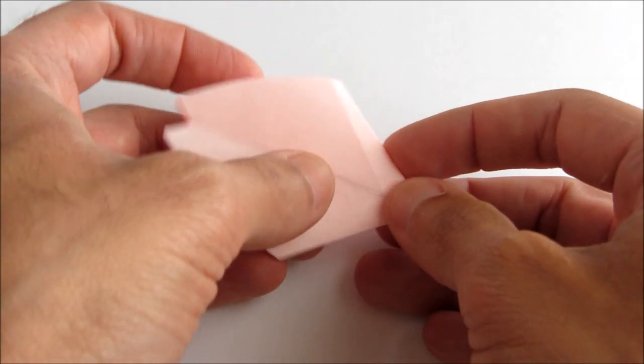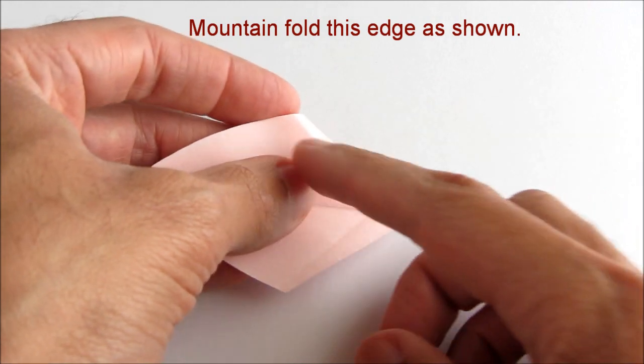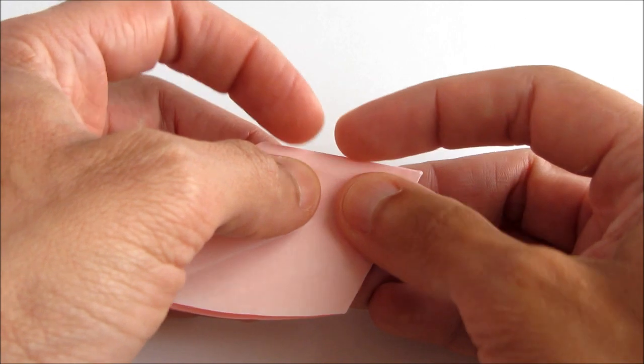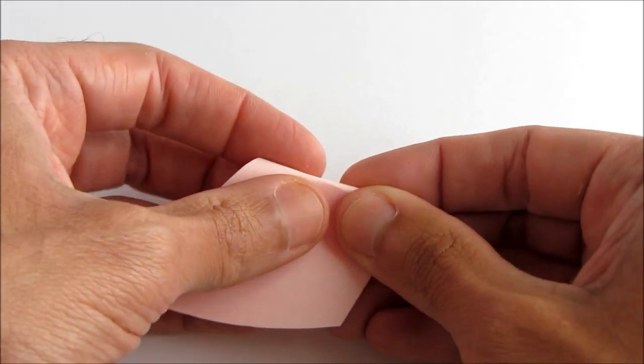So on that lower right edge, what we're going to do is make a mountain fold parallel to the edge, maybe two or three millimeters wide. So just fold that edge over.